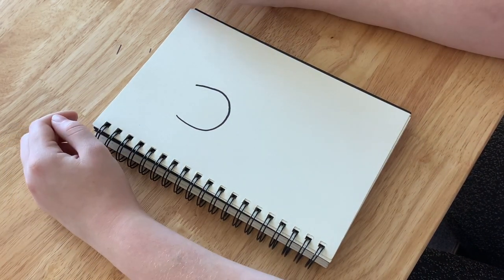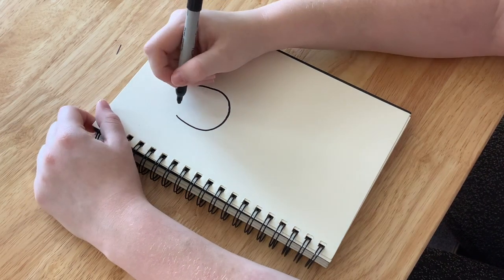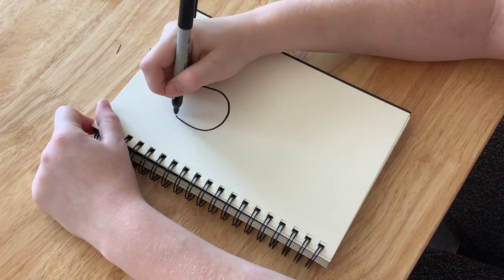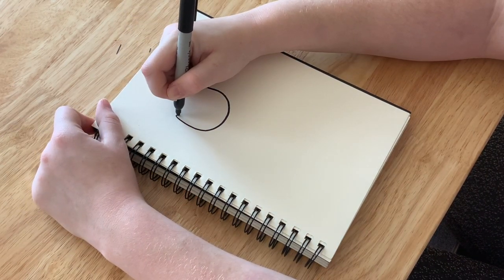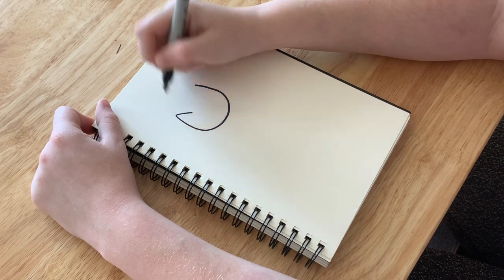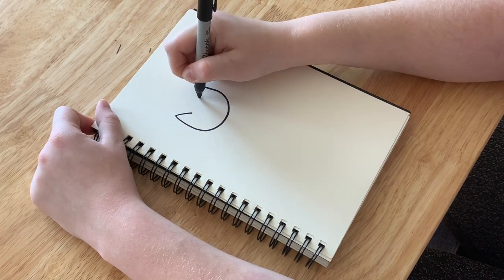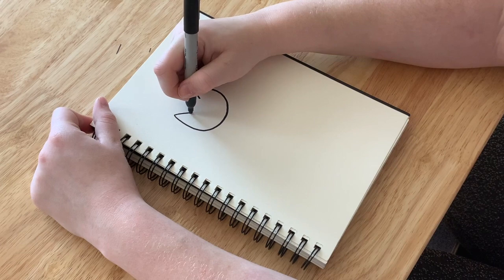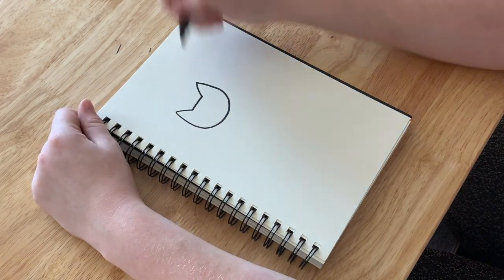And then kittens, they have pointed triangle ears. So we are going to use the top of this line, bring it down to make a little triangle. Same thing on this side, bring it down to make a triangle. And then we're just going to connect them across the middle. So there we go.